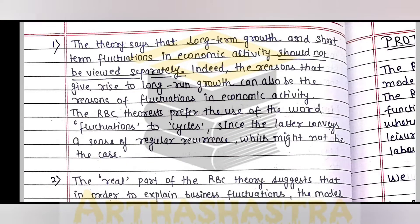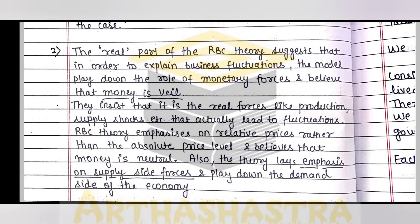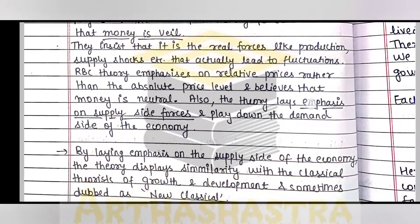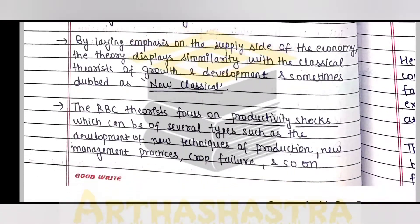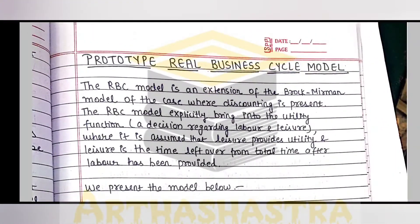Here we have been asked to write down the propositions, so we have listed the propositions. This is a complete theory question and you can write the answer from the IGNOU book as well, and you can use the material available on Google. Here we have underlined the important points like money's veil and terms like neoclassical and productivity shocks.